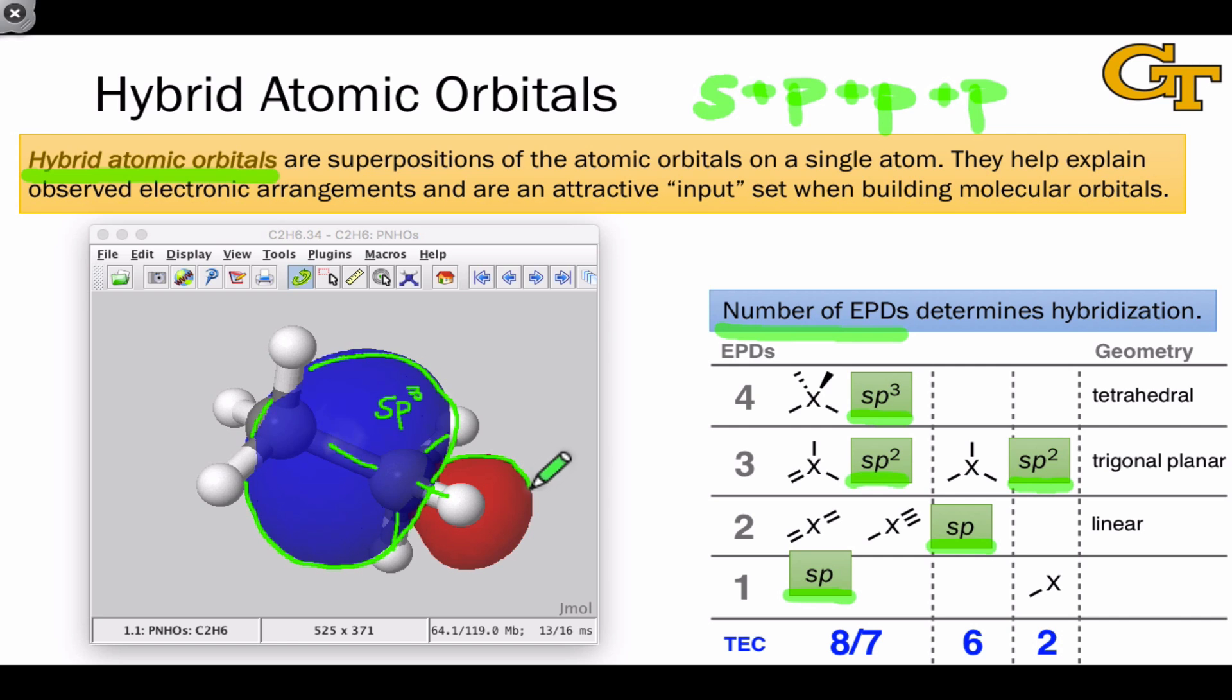Leading to a sort of lobe or what one of my old professors referred to as a little nub on the backside of the hybrid orbital. And notice again that this hybrid is interpenetrating the other carbon, so it's going to be very important for bonding.